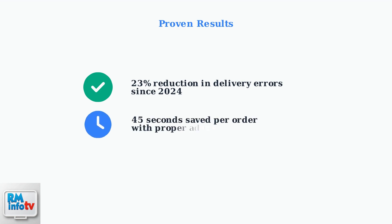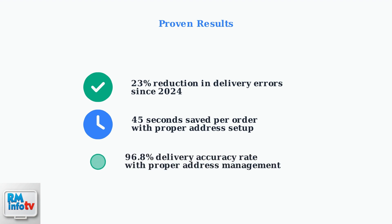Proper address management saves users an average of 45 seconds per order. While this may seem small, it adds up to significant time savings for frequent users. DoorDash now maintains a 96.8% delivery accuracy rate when users properly manage their addresses.